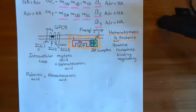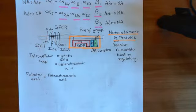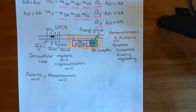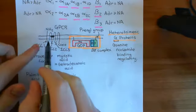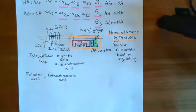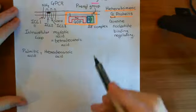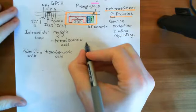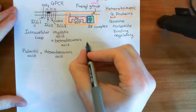Before going into the details of how many different heterotrimeric G proteins there are — all the different alpha, beta, and gamma subunits — let's look at how G proteins are activated by the G-protein-coupled receptor. We'll get the big picture before going into the minutiae.